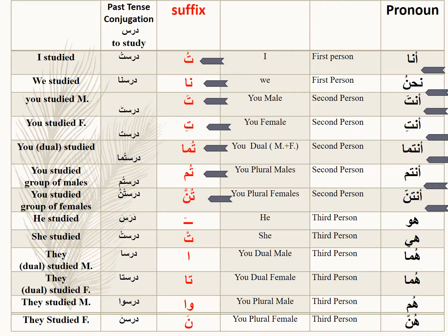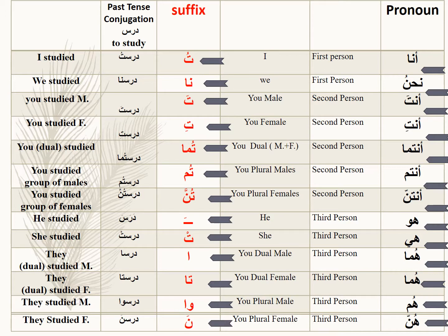Antunna: daras-tunna — you suffix ta-dhamme, noon with shadda and fatha. For the pronoun huwa, you just need to suffix the short vowel fatha — that's it, no letters, just the short vowel. Huwa: daras. Leave the verb as it is, just suffix fatha. Hiya: darasat — suffix ta with sukoon. Huma (male): darasa. Huma (female): darasata. Hum: darasu — suffix waw and alif. The alif is silent; you don't pronounce it. Hunna: darasna.